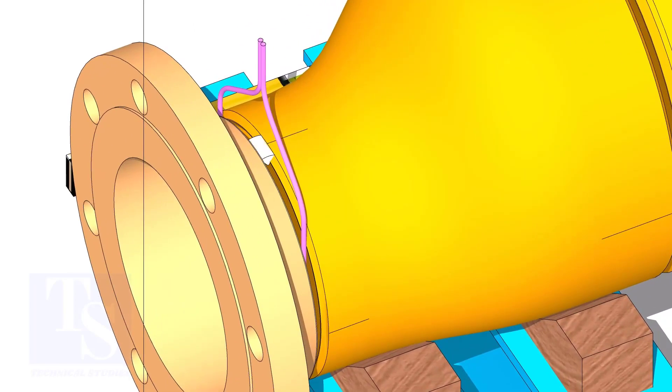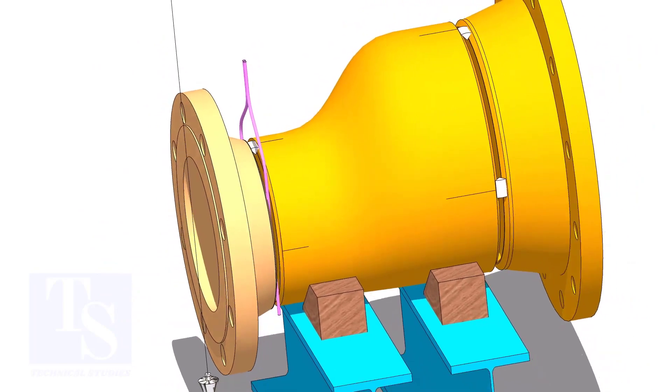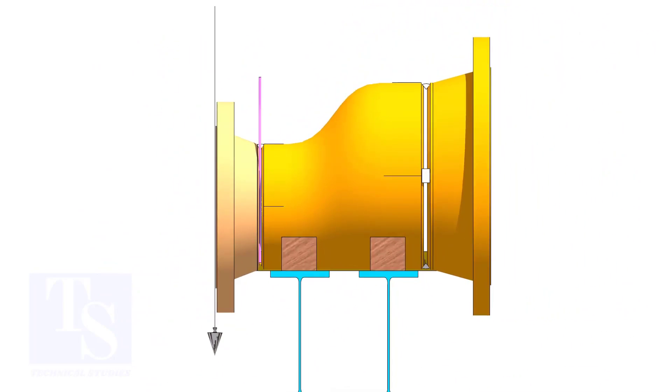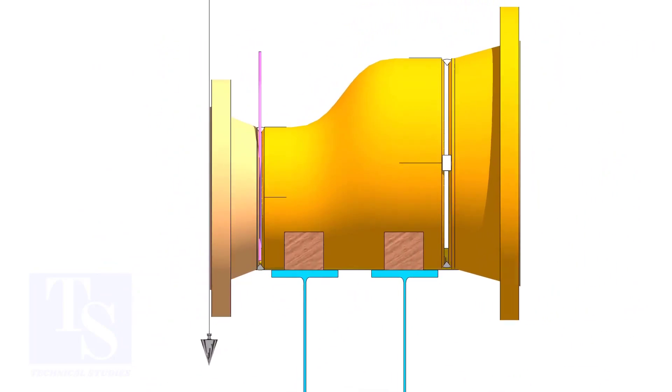Tack weld on the top side. Correct the vertical plumbness and tack weld below.